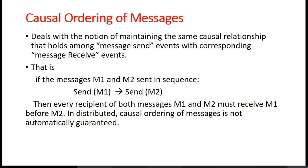This causal ordering of messages actually deals with the problem of maintaining the same causal relationship that holds among message sending events with the corresponding message receiving events. That means, in other words, we can say if there are two messages M1 and M2 which are sent in sequence, we should ensure that the recipient of message M1 must be before M2.